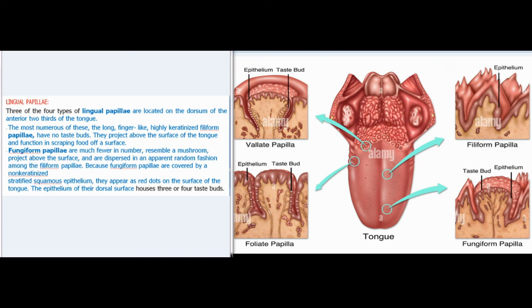Three of the four types of lingual papillae are located on the dorsum of the anterior two-thirds of the tongue. The most numerous of these, the long finger-like highly keratinized filiform papillae, have no taste buds; they project above the surface and function in scraping food off a surface. Fungiform papillae are much fewer in number, resemble a mushroom, project above the surface, and are dispersed in an apparently random fashion among the filiform papillae. Because fungiform papillae are covered by a non-keratinized stratified squamous epithelium, they appear as red dots on the surface of the tongue.